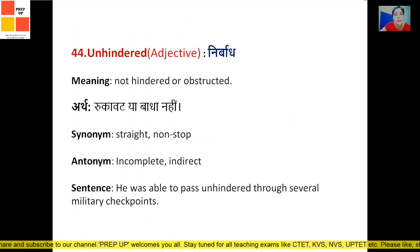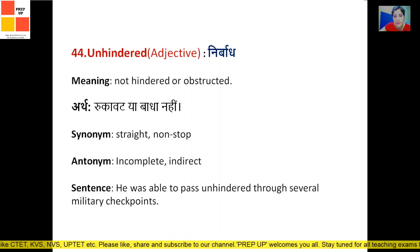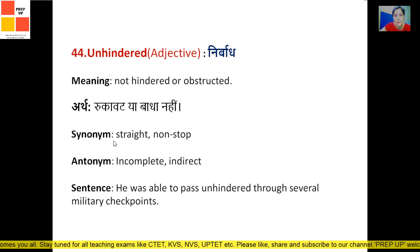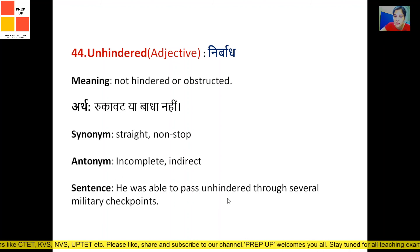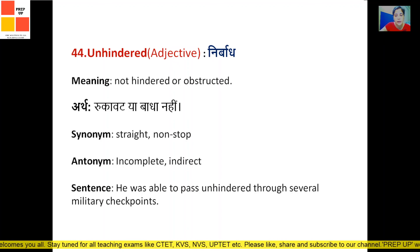Next word is 'unhindered.' Unhindered means 'nirbadh' — not hindered or obstructed, not blocked, with no obstruction in the way. Synonyms are straight and non-stop. Antonyms are incomplete and indirect. Sentence: 'He was able to pass unhindered through several military checkpoints' — meaning there was no obstruction in his way. 'Hindered' means with obstacles; 'unhindered' means with no obstacles. That's a helpful way to remember it.